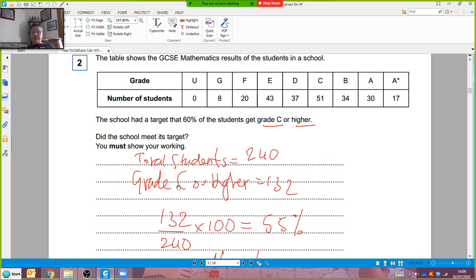Then write down the number of students who got a grade C or higher. Add up these numbers: 132. I've got two marks.